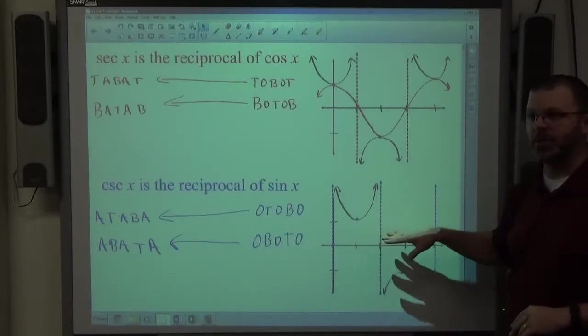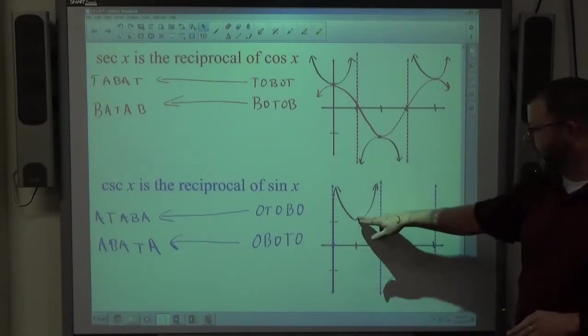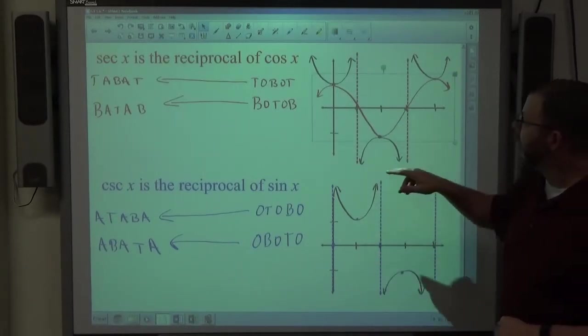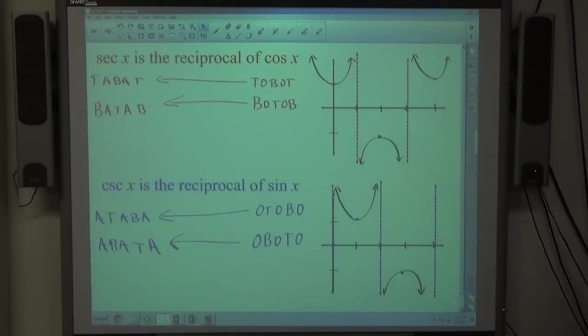A lot of times in the book, they actually draw the sine and cosine graph. Not necessary. The actual secant graph is the black. The cosecant graph is the black. So that's how to do that. I'll print that out when I'm done with all this.